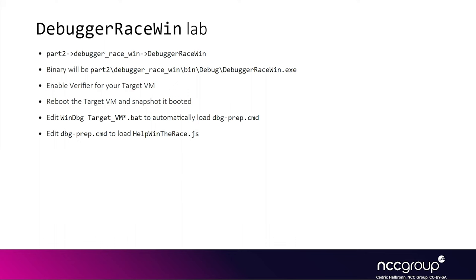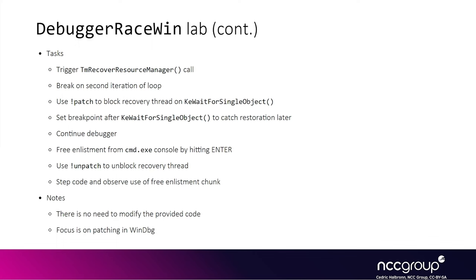This slide summarizes what you need to do now. For the setup, you need to first import the Part 2 labs in Visual Studio, enable Verifier, and modify the debug scripts to load helpWinTheRace.js. The project to use in Visual Studio is DebuggerRaceWin. The source code of that lab is provided entirely, so you don't have to modify anything. We will have a look at it to understand what it does, but you don't need to add any code — it will allow you to win the race as long as you use the debugger and patches correctly.